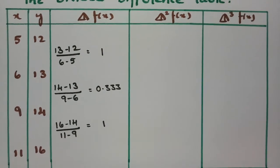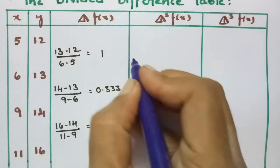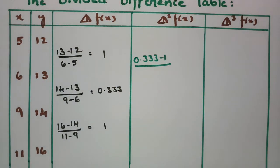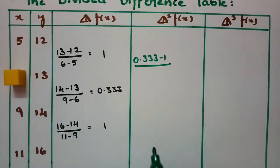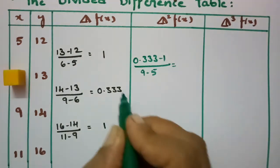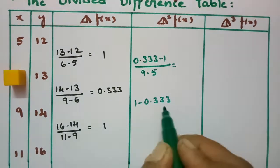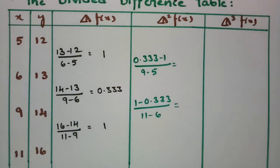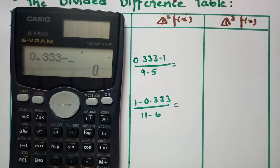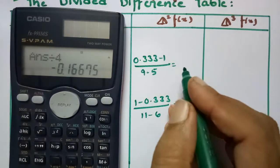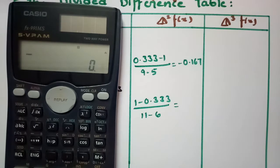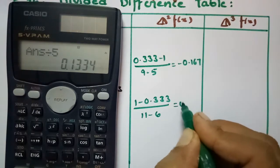For the second divided differences: (0.3333−1)/(9−5) = −0.6667/4 = −0.167; and (1−0.3333)/(11−6) = 0.6667/5 = 0.133. So the second divided differences are −0.167 and 0.133.